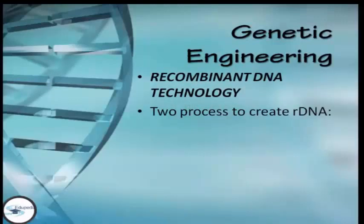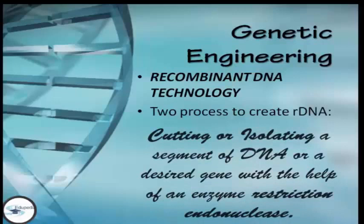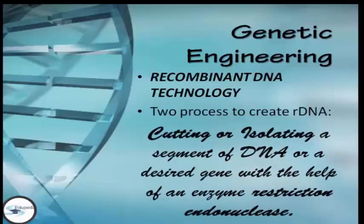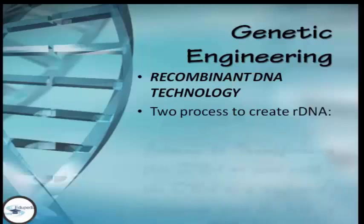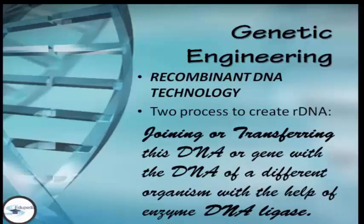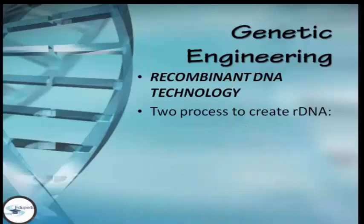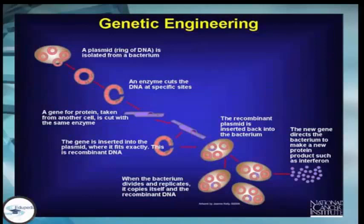There are two processes to create recombinant DNA. First, we have cutting or isolating — isolating a segment of DNA or a desired gene with the help of the enzyme restriction endonuclease. The second process is joining or transferring this DNA or gene with the DNA of a different organism with the help of the enzyme DNA ligase. As you can see in the figure, we have the cutting process and the combining process with other genes.